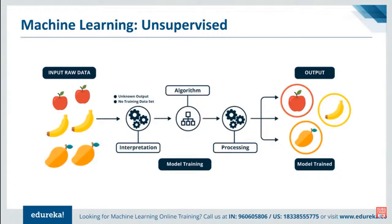In this slide you can see that initially we have different varieties of fruits as input. These fruits are given to the model as input X. Once the model is trained using an unsupervised learning algorithm, it creates clusters on the basis of its training, grouping similar fruits together into their respective clusters.